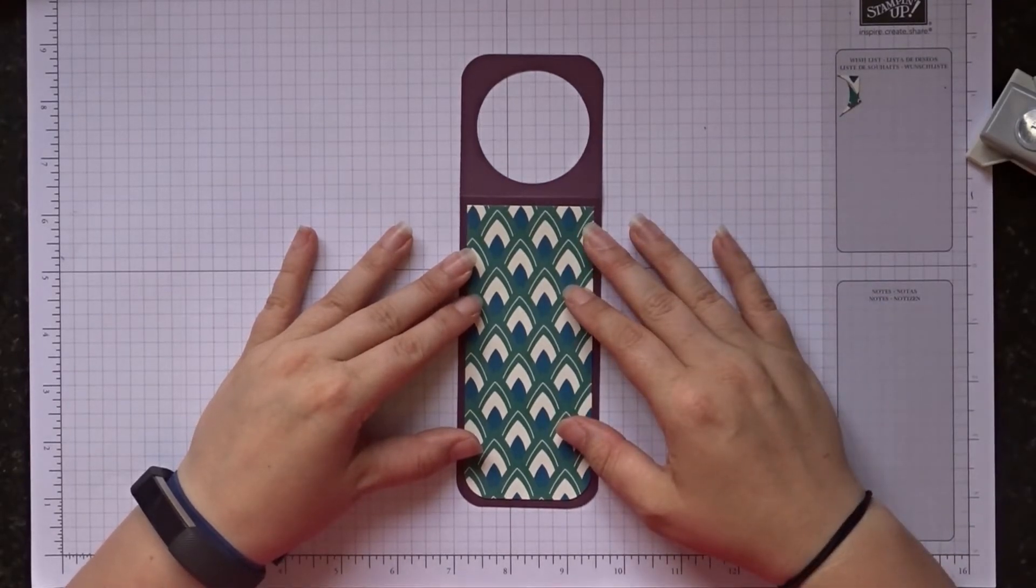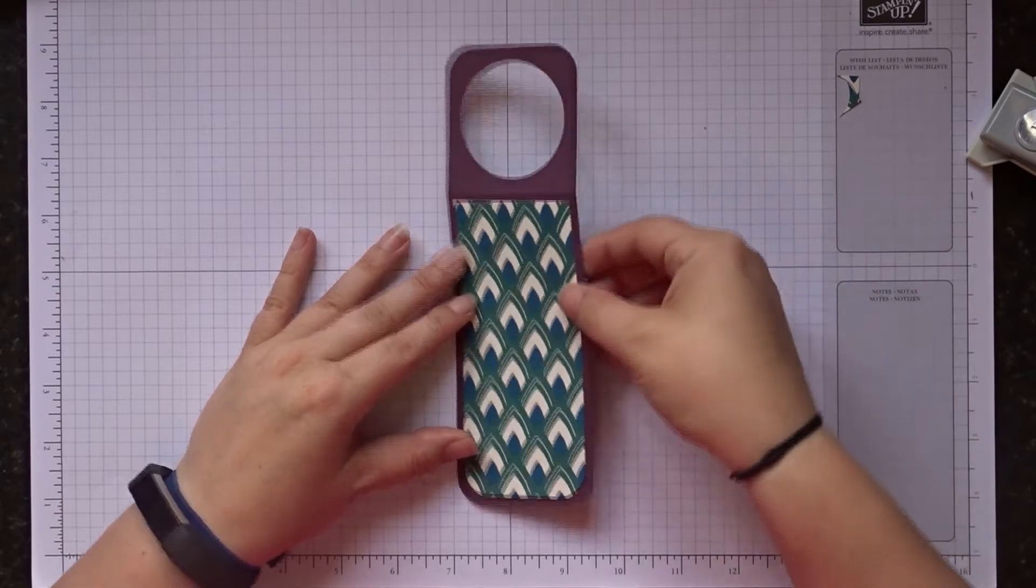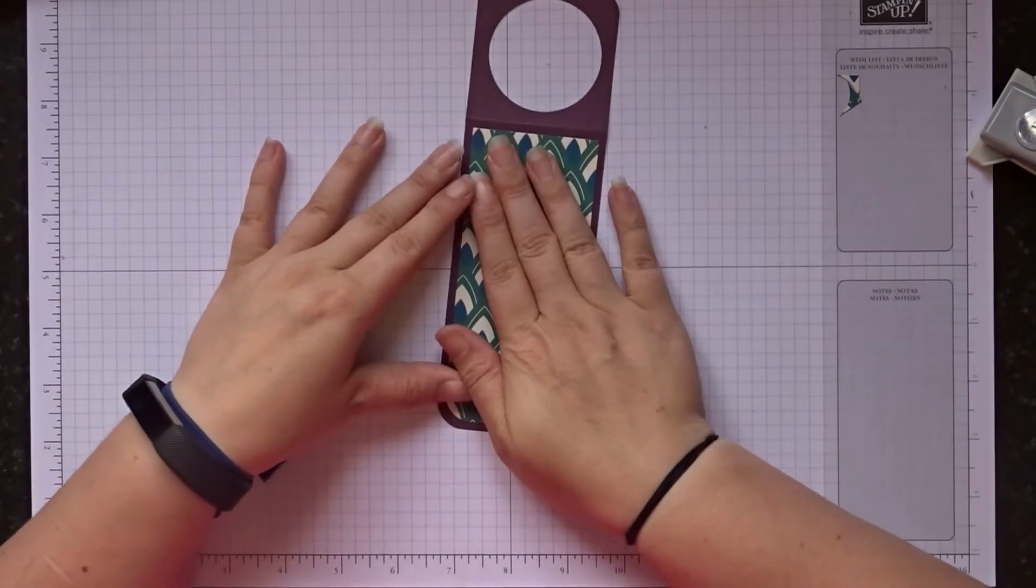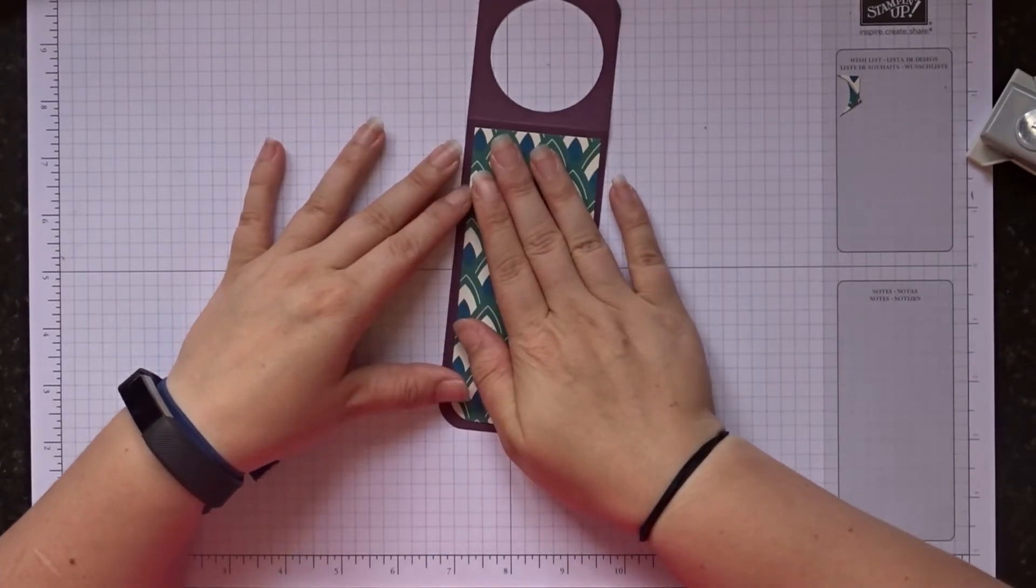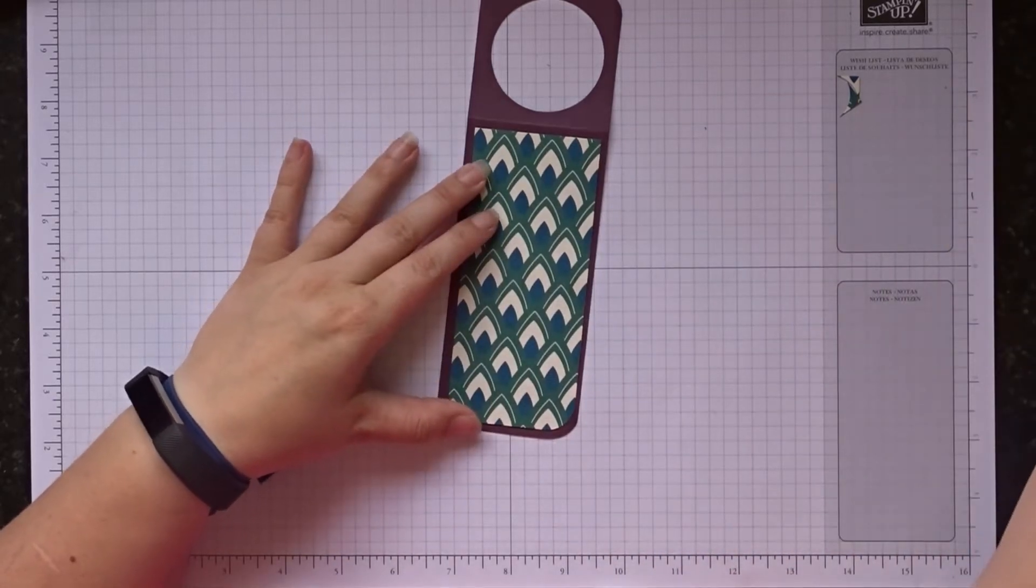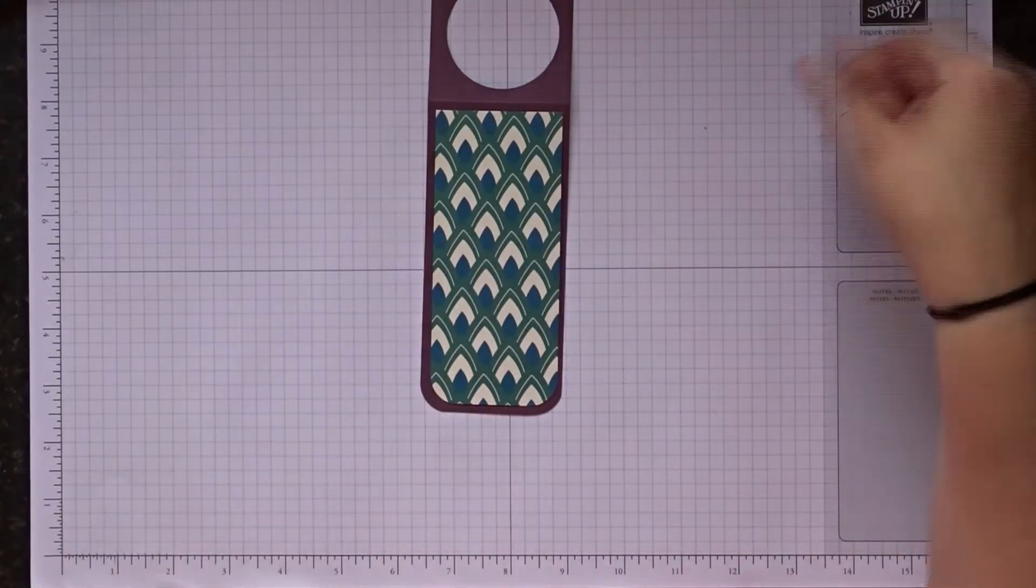And just round two of the corners. So hopefully you can see that just fits on there perfectly. Next then we're going to make the decoration. So to do this, we'll do the stamping first actually.